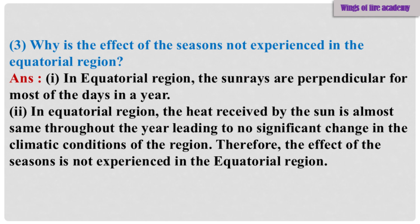Sub-Question 3: Why is the effect of the seasons not experienced in the equatorial region? Answer: 1. In the equatorial region, the sun rays are perpendicular for most of the days in a year. 2. In the equatorial region, the heat received from the sun is almost the same throughout the year, leading to no significant change in the climatic conditions of the region. Therefore, the effect of the seasons is not experienced in the equatorial region.